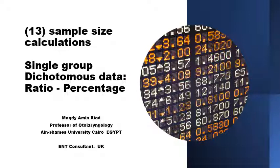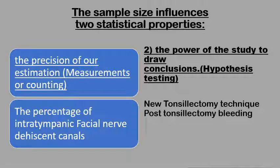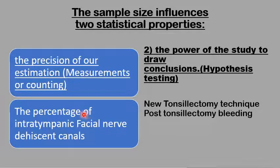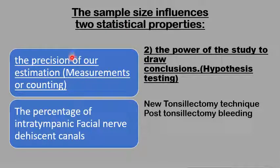The sample size influences two important statistical properties. The first is the precision of our estimation — how accurate is our estimation of, for example, the percentage of intratympanic facial nerve canal dehiscence in a number of skulls or surgical specimens. The percentage together with the margin of error and the level of confidence would reflect this precision. The higher the sample size, the better the precision.